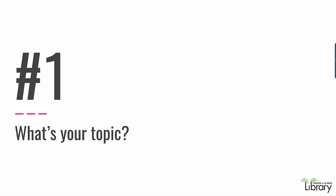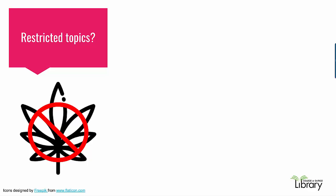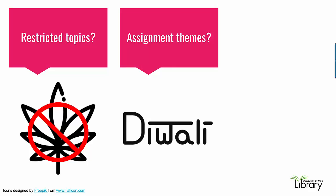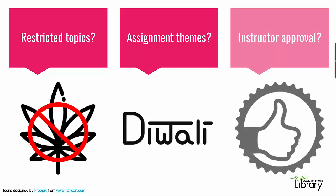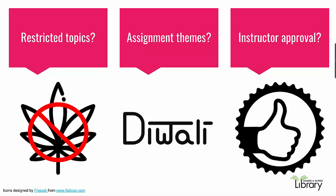Let's start with selecting a topic. Your assignment might provide guidelines for topic selection, so take a moment to review your assignment. Are there topics you cannot pick, like the legalization of marijuana or gun control? Is there a theme you should consider, such as civic engagement or a cultural artifact? And does your instructor need to approve your topic before you begin your research?